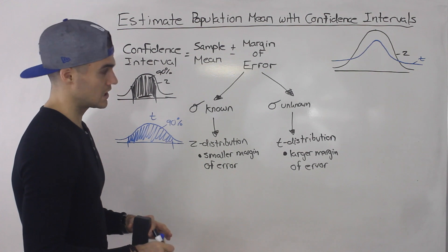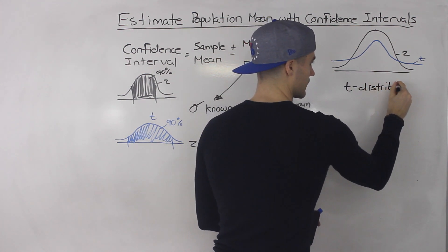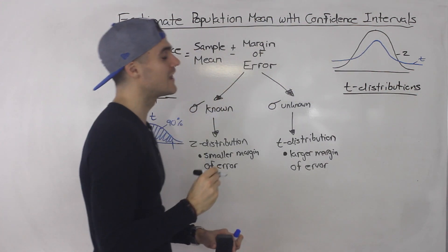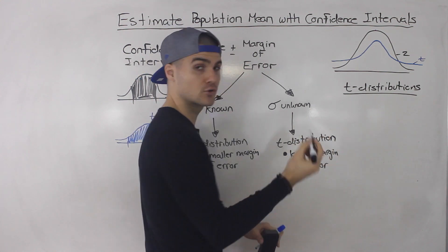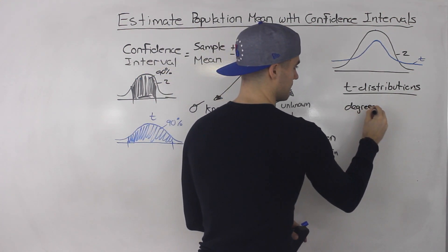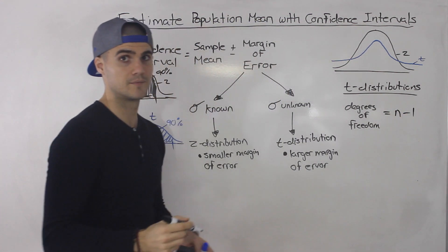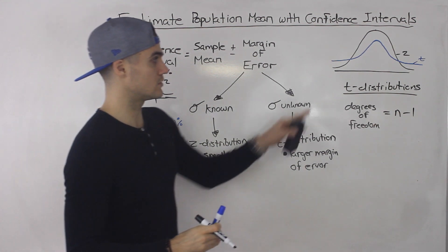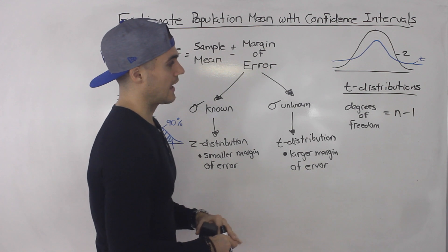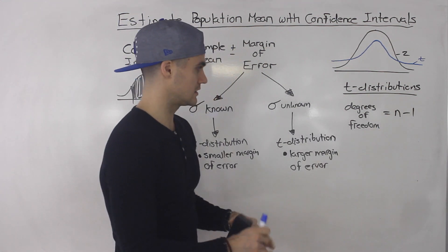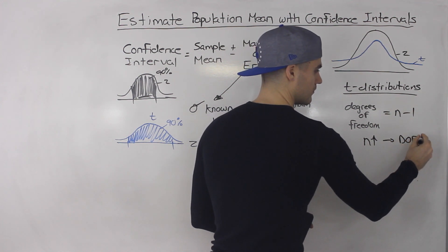One important thing about the T distribution: there are actually multiple T distributions, whereas there is only one Z distribution. The different T distributions depend on something called the degrees of freedom, which is simply the sample size minus one. So which T distribution you use depends on your sample size, because degrees of freedom depends on sample size.